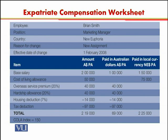The cost of living allowance is paid in local currency rather than parent country currency. The base salary of 200,000 is divided into two equal components — payment in local country currency and payment in parent country currency. Half, which is 100,000, is paid in Australian dollars. The other 100,000, converted at the exchange rate of 1.5, amounts to 150,000 New Euphoria dollars. So he receives 100,000 Australian dollars and 150,000 New Euphoria dollars.